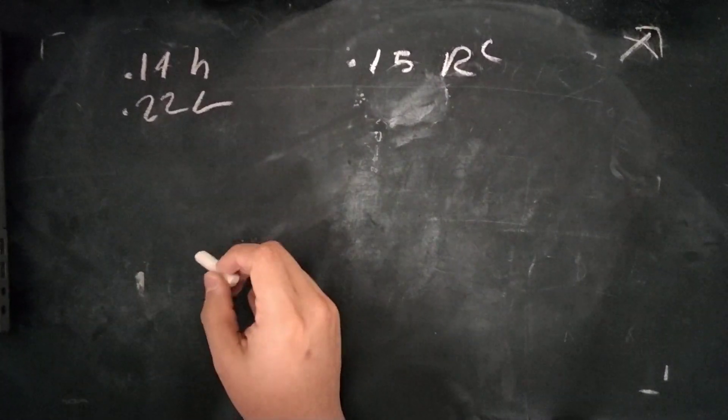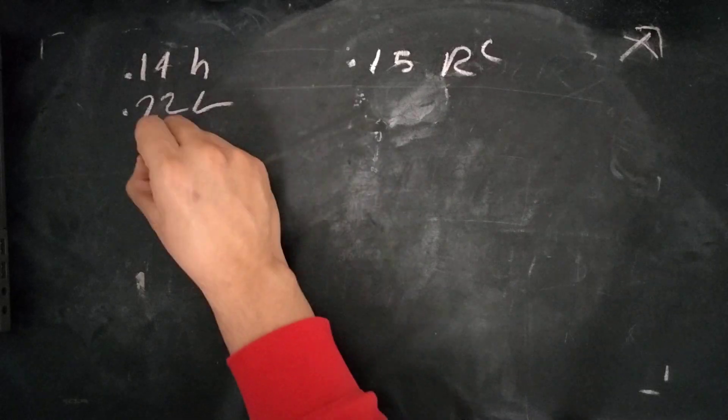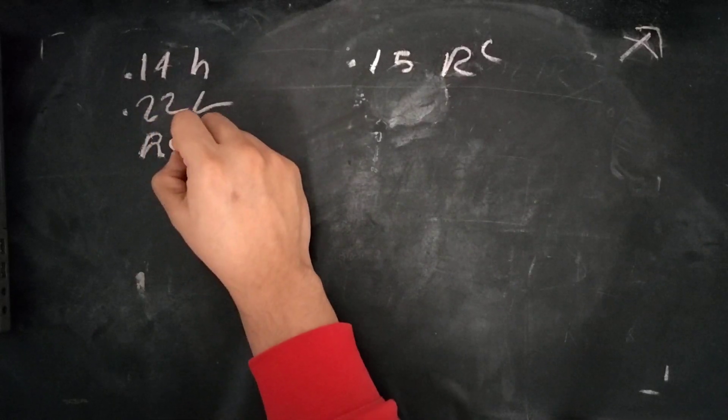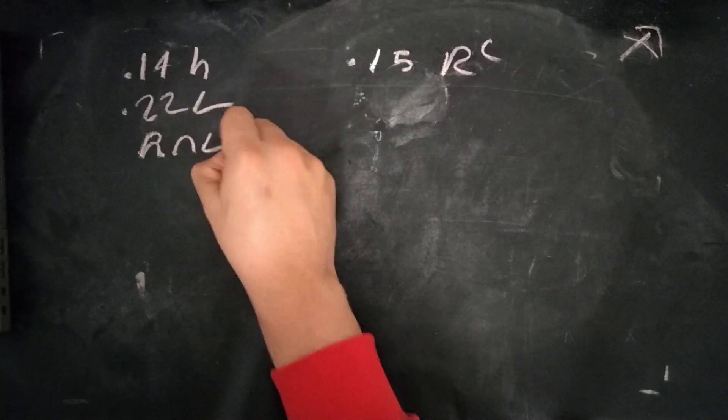So it's asking us to calculate the portion of patients selected who have regular heartbeats and low blood pressure.